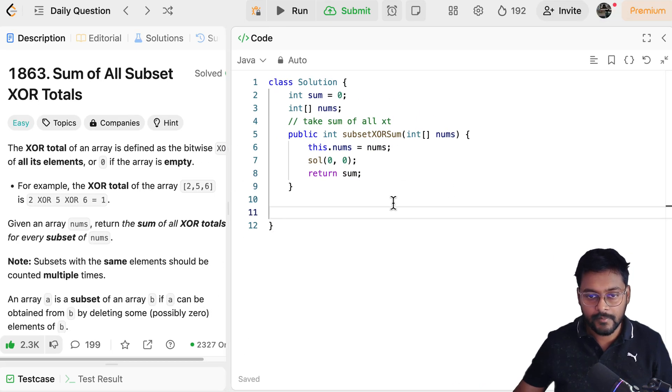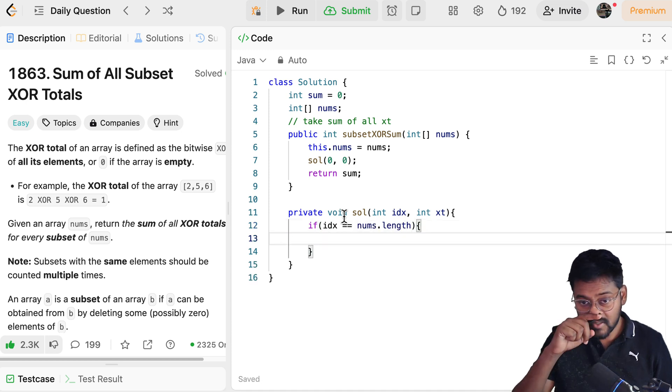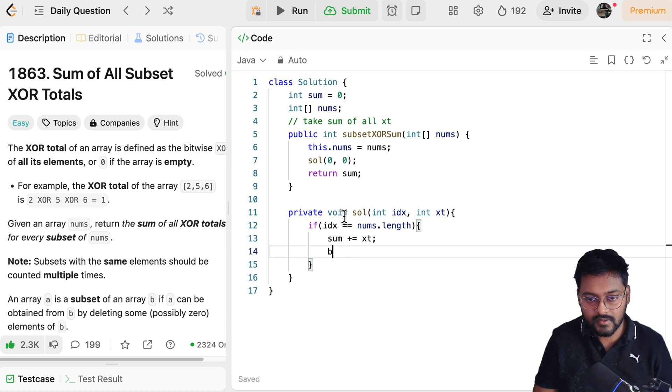Now we just have to implement this solution function. So it is private void solution, integer index and integer current XOR total. If it is a terminating case, just capture XT. It means sum plus equal to XT. And then return. Otherwise we will fall into infinite looping.